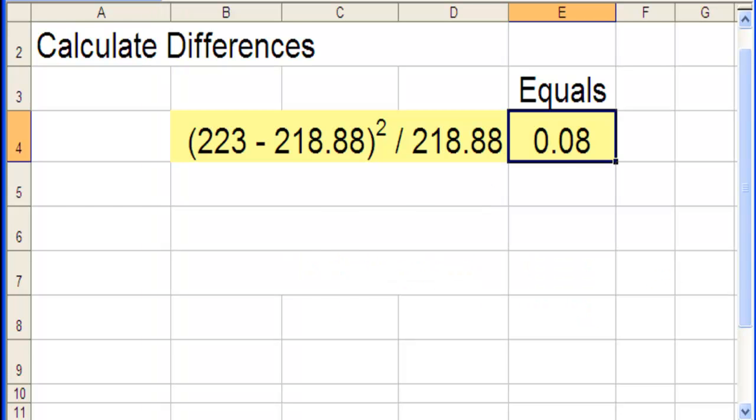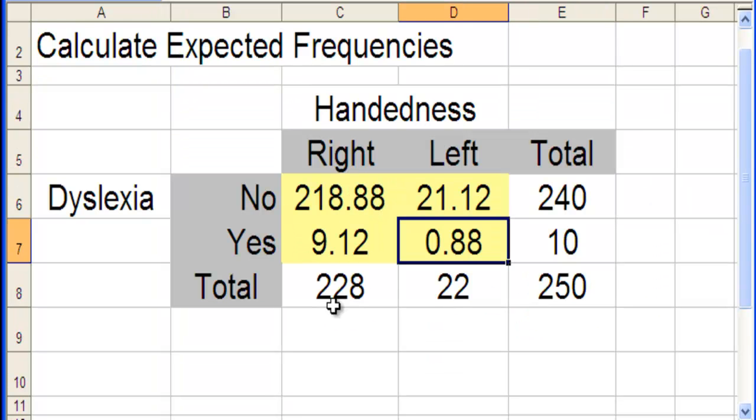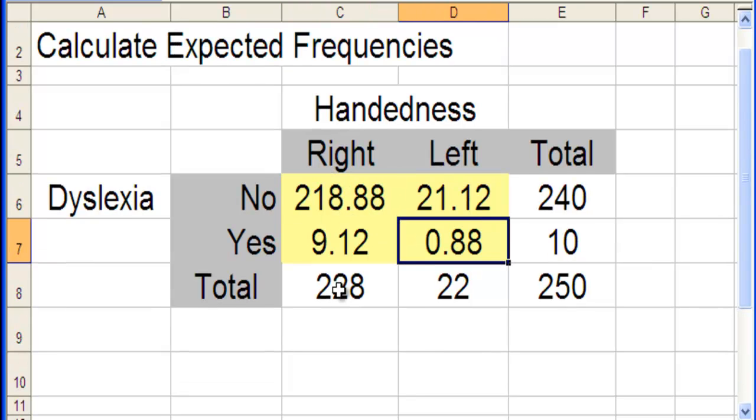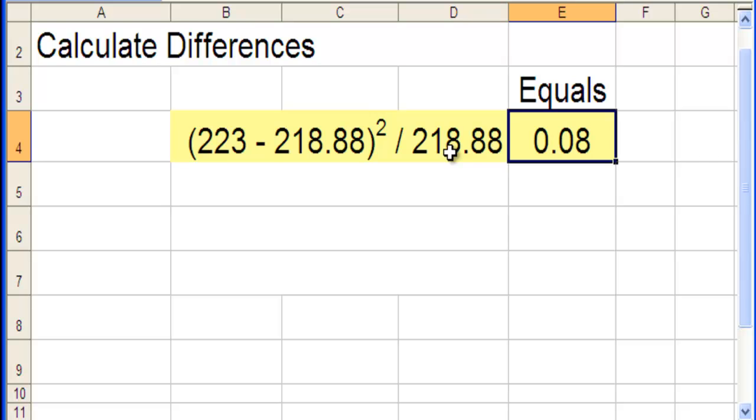Now I'll just point out quickly where I got those numbers. It's the observed cell, 223 minus the expected cell, and then it's divided by the expected cell. So 223 minus 218.88 squared, the difference squared divided by 218 gives you 0.08.